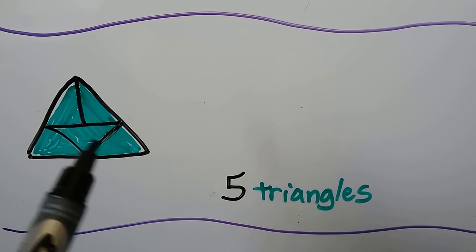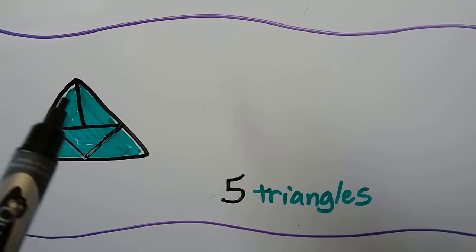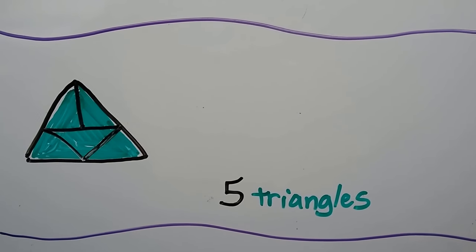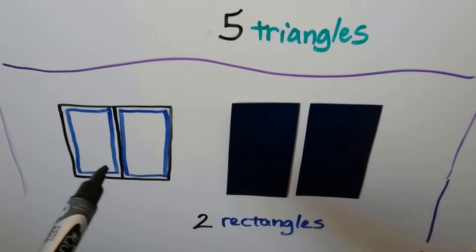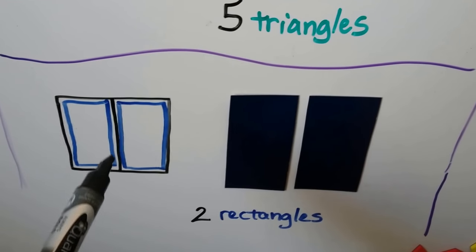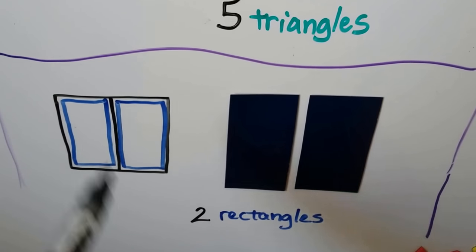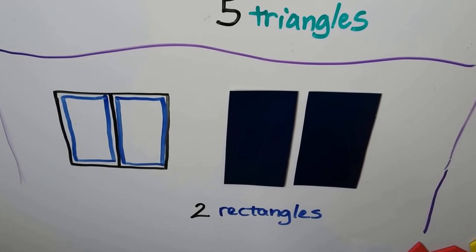We could even draw lines to show five triangles inside of a triangle — one, two, three, four, five. We can also draw lines to show two triangles inside of a square.